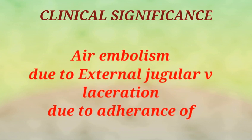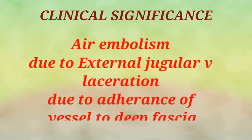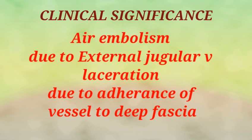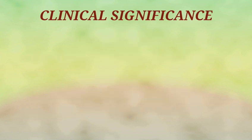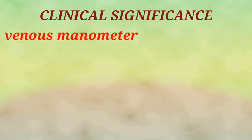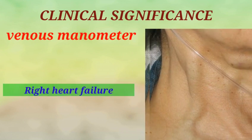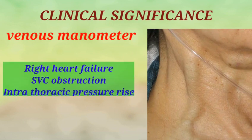It communicates with the internal jugular vein. When the external jugular vein is severed, the most drastic complication of air embolism with hemorrhage may occur because of the suction of air due to negative intrathoracic pressure. This occurs because the vessel would not contract easily due to its adherence to the deep fascia. This condition is a medical emergency, and immediate finger pressure to occlude the wound becomes necessary.